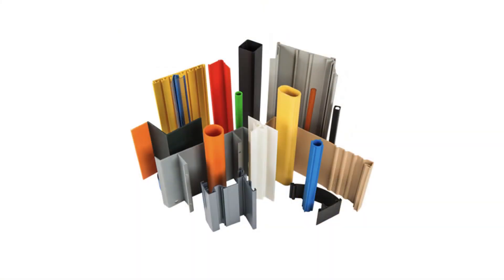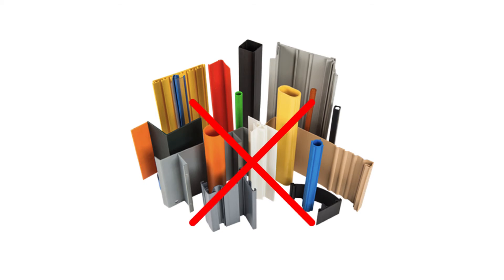How about long profiles such as tubes, pipes, or siding? Again, the walls are thin and uniform, but these are not suitable for injection molding simulation. Long profiles with a constant cross section are usually manufactured using the extrusion process, which is currently not supported in Fusion 360.